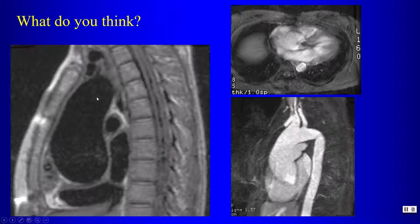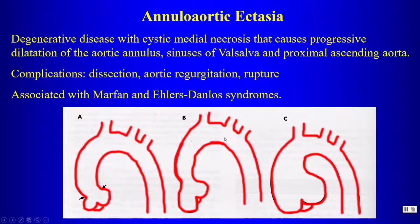This case shows black blood MRI in sagittal view, MR angiography, and bright blood imaging of the outflow tract of the left ventricle. There is dilatation of the ascending aorta extending all the way down to the aortic root and sinuses of Valsalva. On bright blood imaging we can see aortic valvular regurgitation. This is an example of annuloaortic ectasia, associated with cystic medial necrosis causing progressive dilatation of the aortic annulus, sinuses of Valsalva, and proximal ascending aorta. Complications include dissection, aortic regurgitation, and rupture.